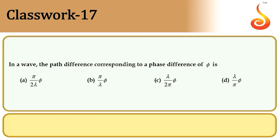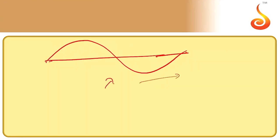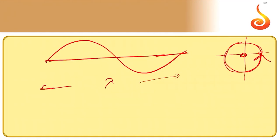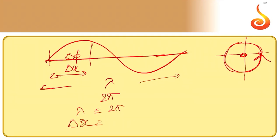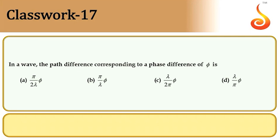Example 17: The path difference corresponding to a phase difference φ. One wavelength corresponds to 2π phase. So for path difference Δx and phase difference Δφ: Δx = (λ/2π)·Δφ.